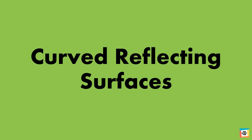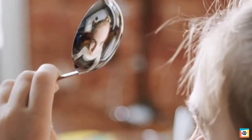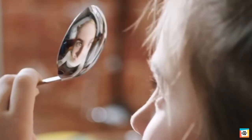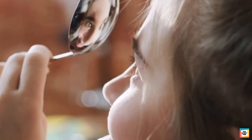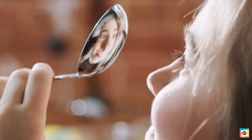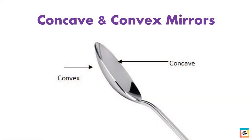Not all reflecting surfaces are flat like a plane mirror. Concave and convex mirrors have curved surfaces. Have you ever looked into a metal spoon and seen the image of your face? Do the front and the back of the spoon give the same image? A concave mirror has a reflecting surface that caves inwards, just like the front of a metal spoon.